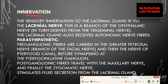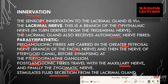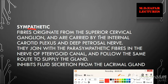Sensory innervation to the lacrimal gland is through the lacrimal nerve, a branch of the ophthalmic nerve. The gland also receives autonomic fibers from both parasympathetic and sympathetic systems. Parasympathetic preganglionic fibers are carried in the greater petrosal nerve — a branch of the facial nerve — then the nerve of the pterygoid canal, synapsing at the pterygopalatine ganglion. Postganglionic fibers travel along the maxillary and zygomatic nerves. Parasympathetic stimulation causes fluid secretion. Sympathetic fibers originate from the superior cervical ganglion, carried by the internal carotid plexus and deep petrosal nerve, joining parasympathetic fibers in the pterygoid canal.